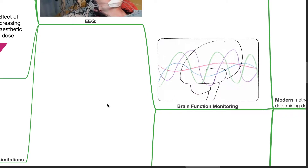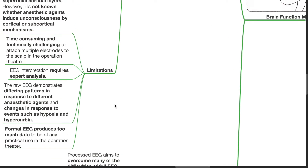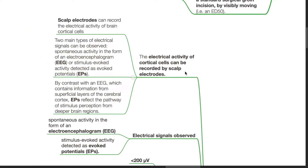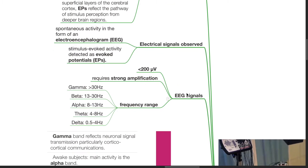We can monitor depth of anesthesia by brain function monitoring, which includes EEG and processed EEG. The electrical activity of cortical cells can be recorded by scalp electrodes, used to assess EEG or evoked potentials (EP). By contrast with an EEG, which contains information from superficial layers of the cerebral cortex, evoked potentials reflect the pathway of stimulus perception from deeper brain regions. The electroencephalogram measures the spontaneous activity of cortical cells, while stimulus-evoked activity is detected as evoked potentials. EEG signals are less than 200 µV in amplitude, thus requiring strong amplification.